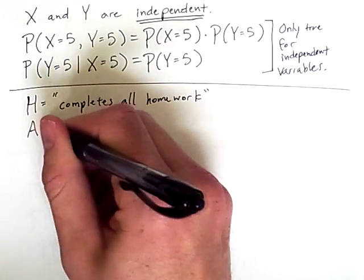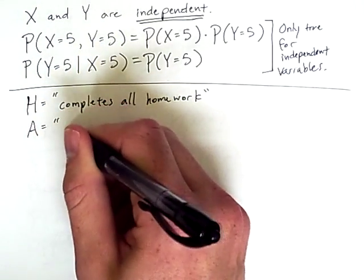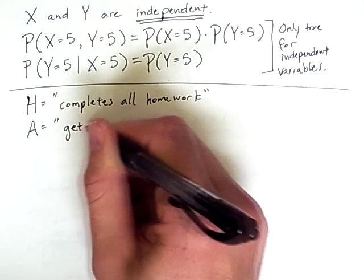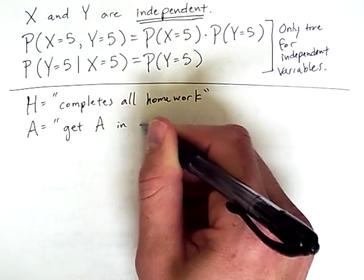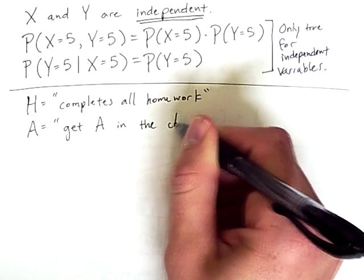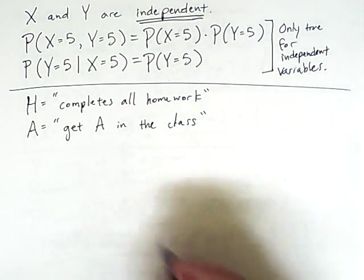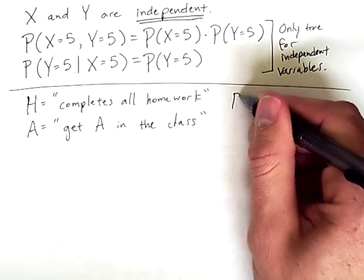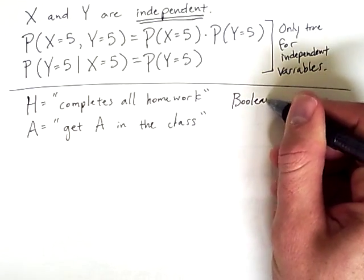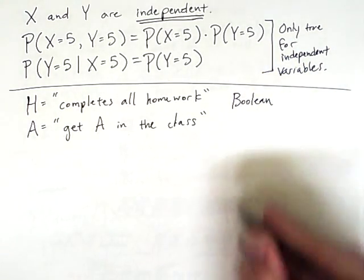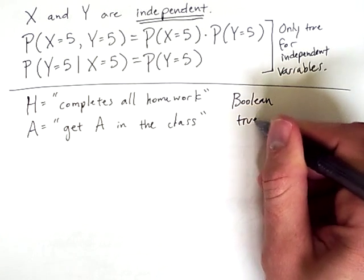Similarly, I can have another random variable, A, for someone getting an A in the class. So we have two random variables, and these random variables are also a little bit different from what we've seen so far in that they are Boolean random variables. They only take on values of true or false.